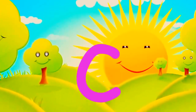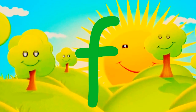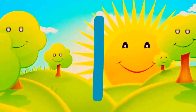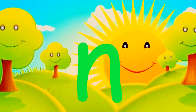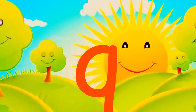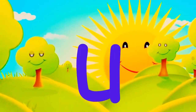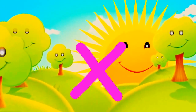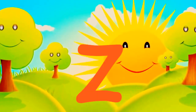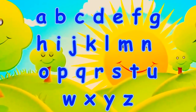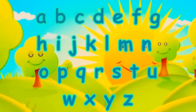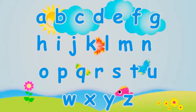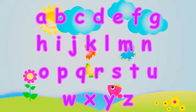A, B, C, D, E, F, G, H, I, J, K, L, M, N, O, P, Q, R, S, T, U, N, V, W, X, Y, and Z. Now I know my A, B, C, 26 letters from A to Z.